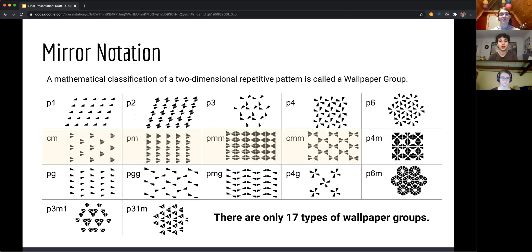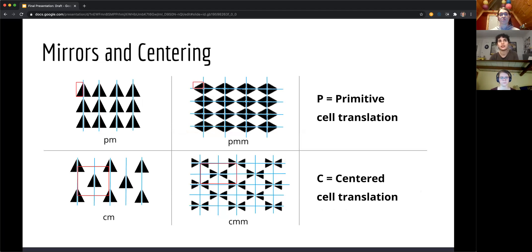Next, we have our mirror classification. So if the notation has an M in it, it means it has either vertical or horizontal reflection lines. And you can see that here. There are two kinds of centering. You can either have primitive cell translation where the shape itself is centered, or centered cell translation, where if you drew a box around four elements, there will be an item in the center of those four sets of triangles as well.